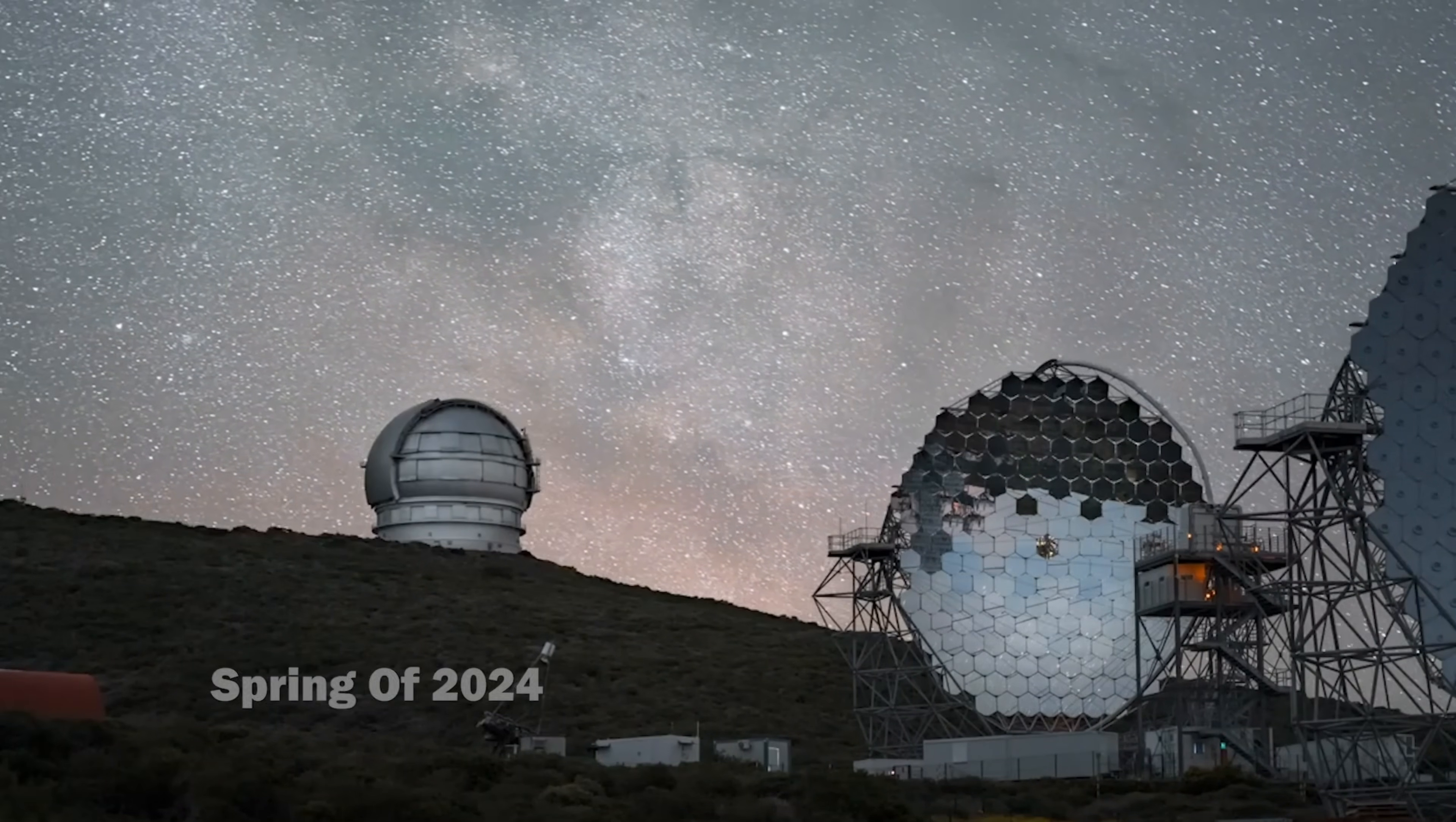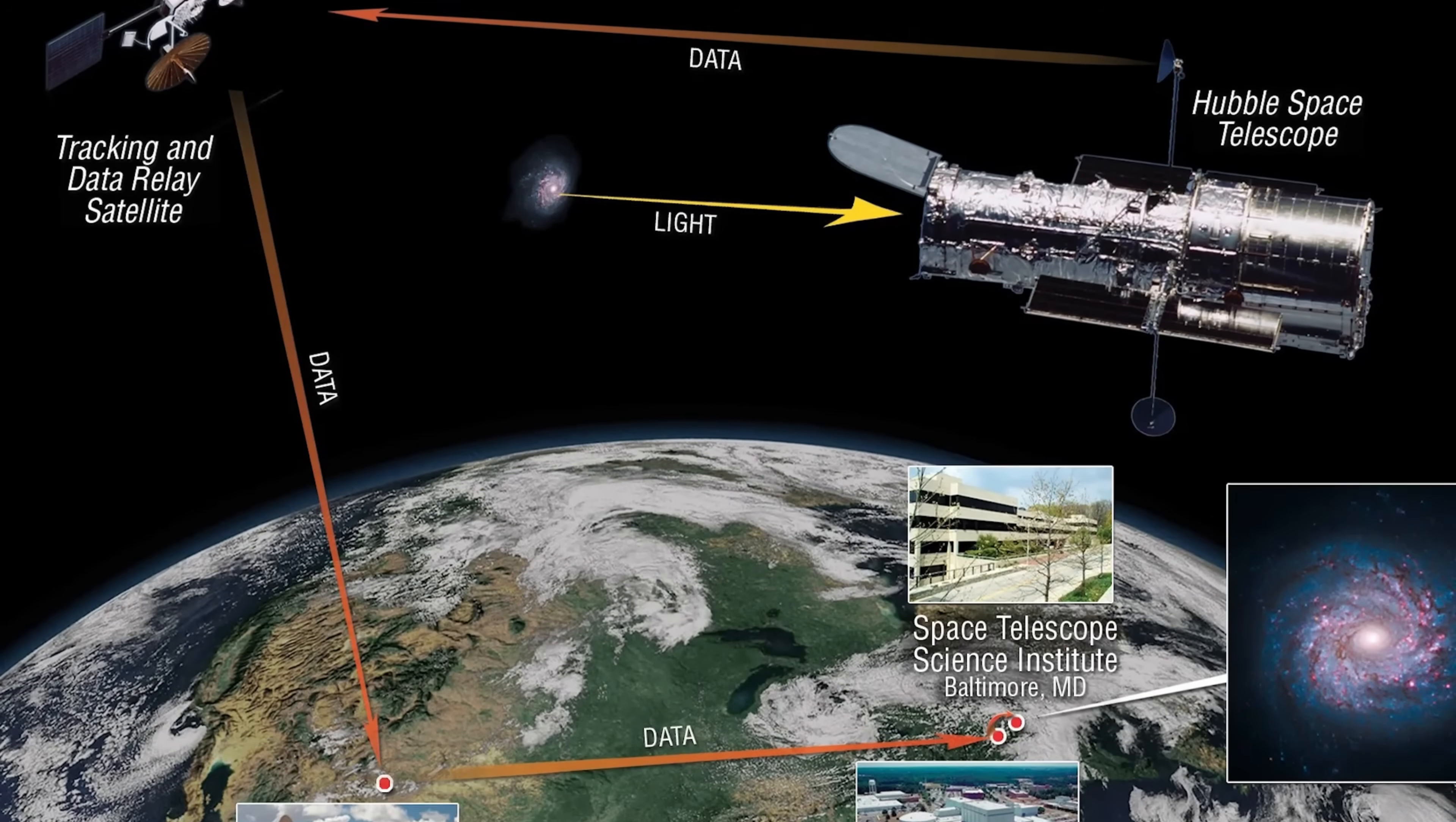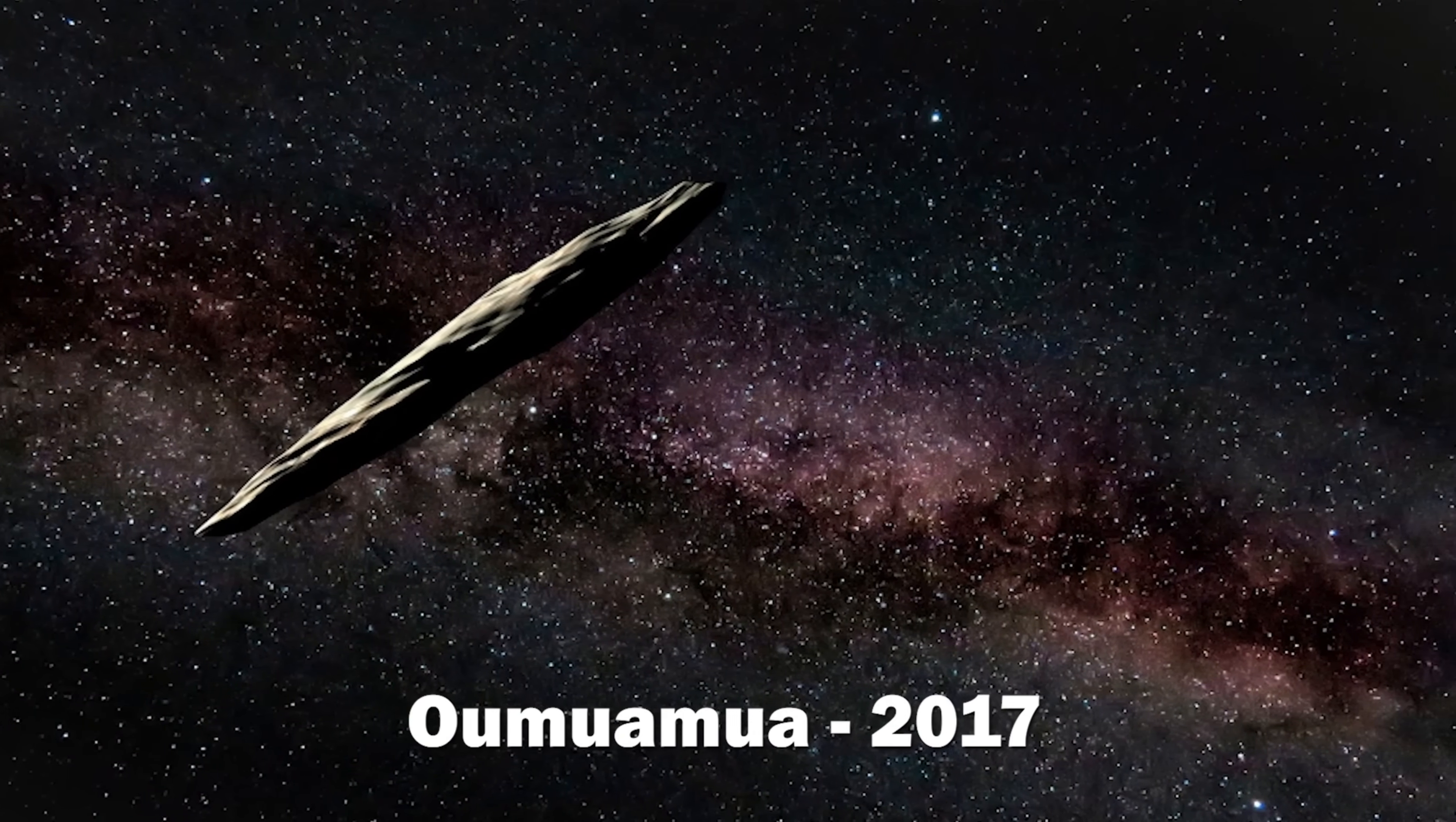In the spring of 2024, a faint moving speck of light appeared in the data stream of the Atlas Survey in Hawaii, the Asteroid Terrestrial Impact Last Alert System, a network of telescopes built to spot anything headed toward Earth. What the system found that night wasn't a threat, but it was unlike anything astronomers had seen since Oumuamua in 2017.